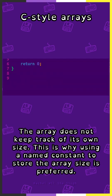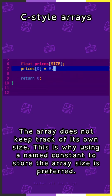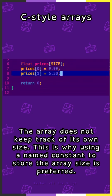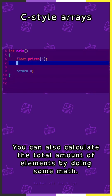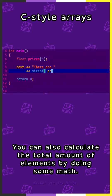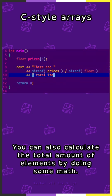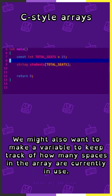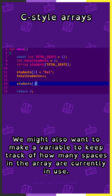The array does not keep track of its own size. This is why using a named constant to store the array size is preferred. You can also calculate the total amount of elements by doing some math. We might also want to make a variable to keep track of how many spaces in the array are currently in use.